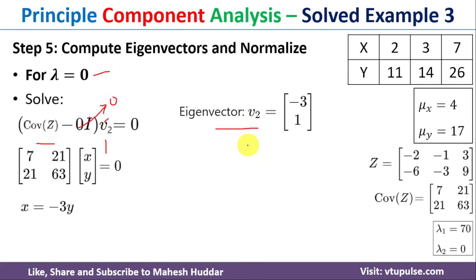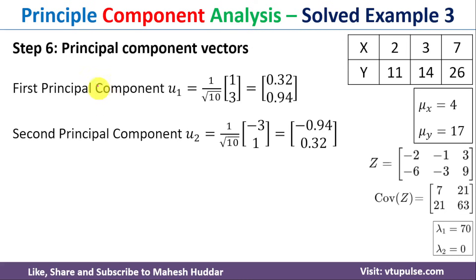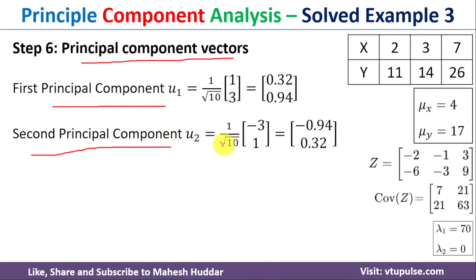Next we compute the normalized eigenvectors by dividing each eigenvector by its length. The second normalized eigenvector is v̂₂ = (1/√10) × [−3, 1]. The first principal component u₁ is the first normalized eigenvector: (1/√10) × [1, 3]. The second principal component u₂ = (1/√10) × [−3, 1].